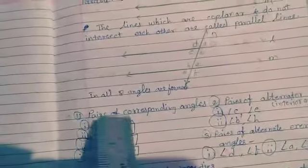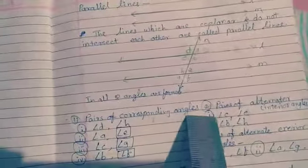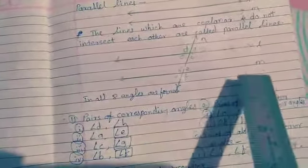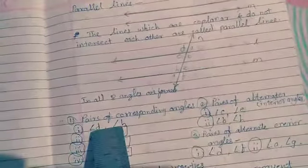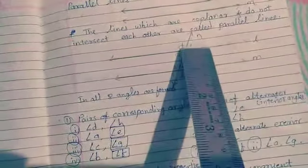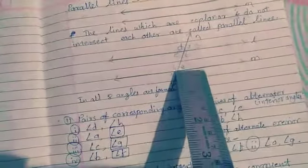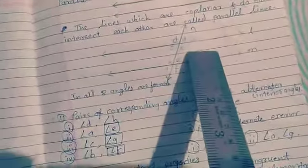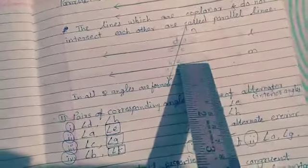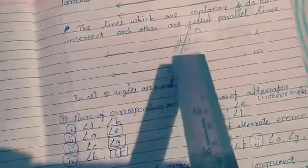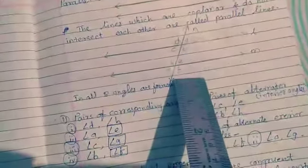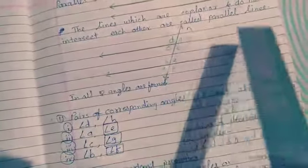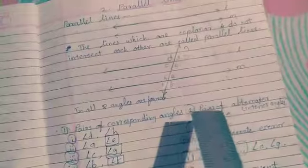Number 1: Pairs of corresponding angles. Corresponding means at the same side. Here, angle D and H, angle A and E, angle C and G, and angle B and F are the corresponding angles.